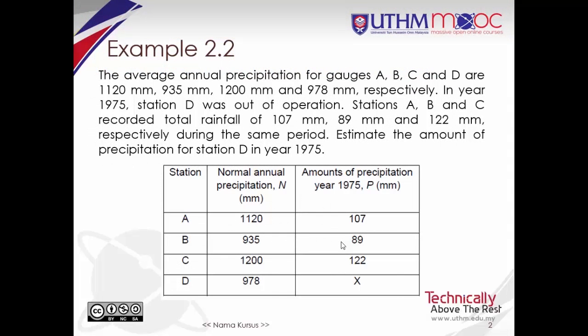Example 2.2. The average annual precipitation for gauges A, B, C and D are 1,120mm, 935mm, 1,200mm and 978mm respectively. In year 1975, Station D was out of operation.